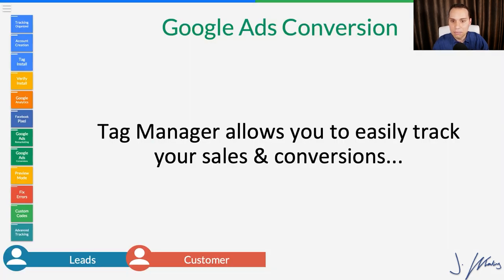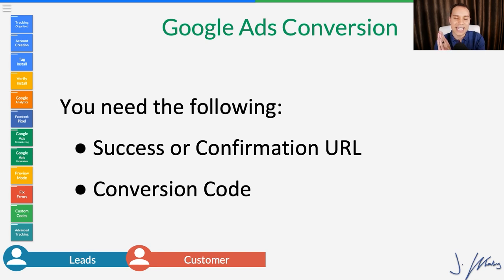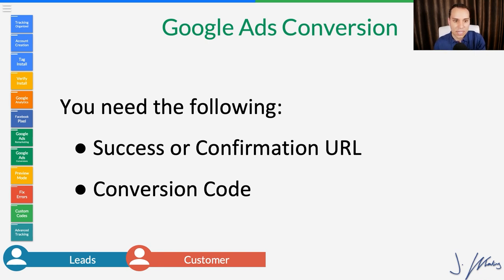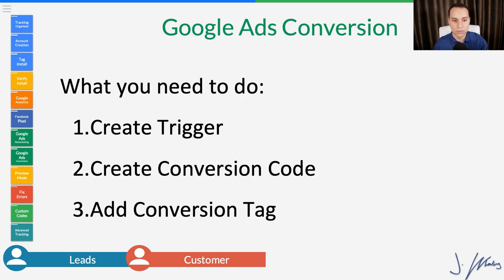Let's get a little more advanced and set up a Google Ads conversion tag. With your conversion tag, you are tracking a specific event on your website — so far we've cast a very wide net, but now we want to know when someone takes a specific action. You'll need your success or confirmation page URL — whatever page comes after what you're tracking. If you're doing landing pages, you want the confirmation page from your landing page. If you're tracking sales, you want the confirmation page after checkout. First we need to create a trigger, then create the conversion code, and add it to Tag Manager using that trigger.